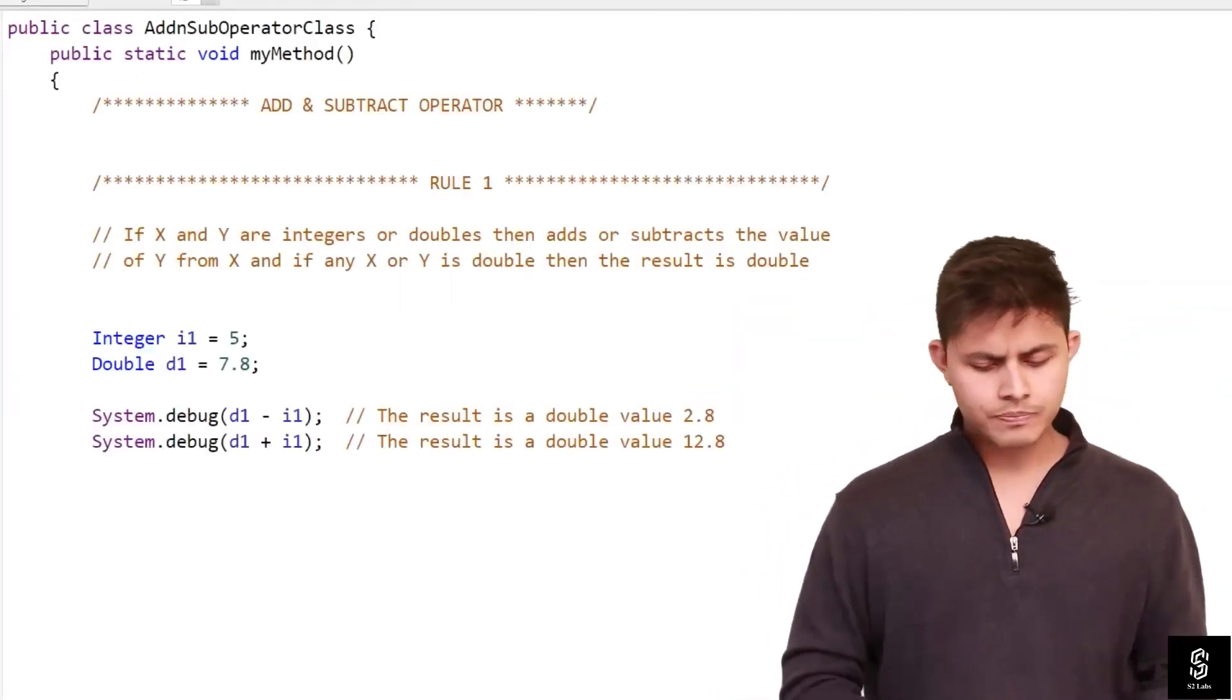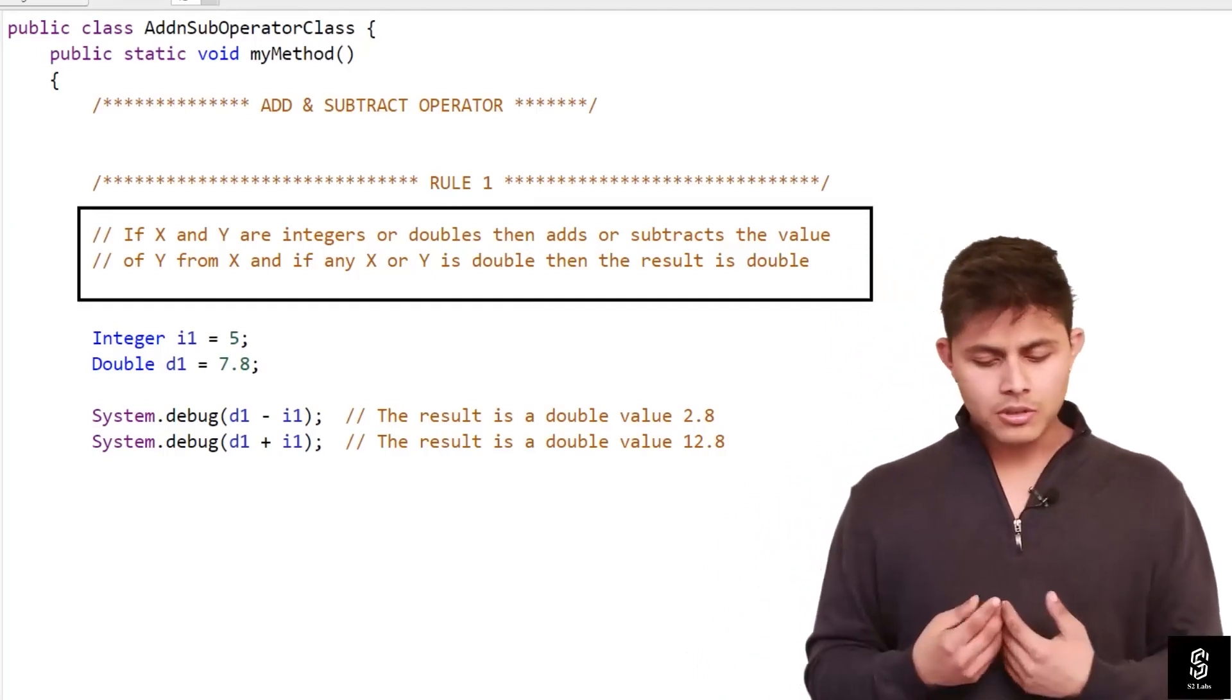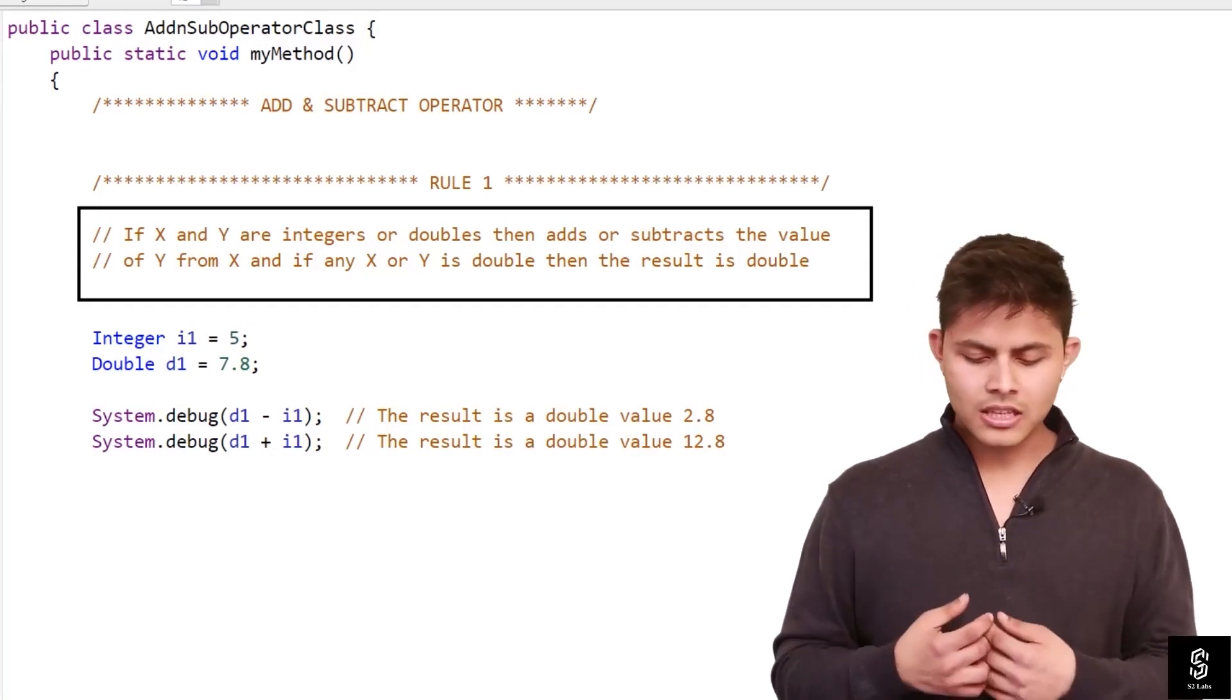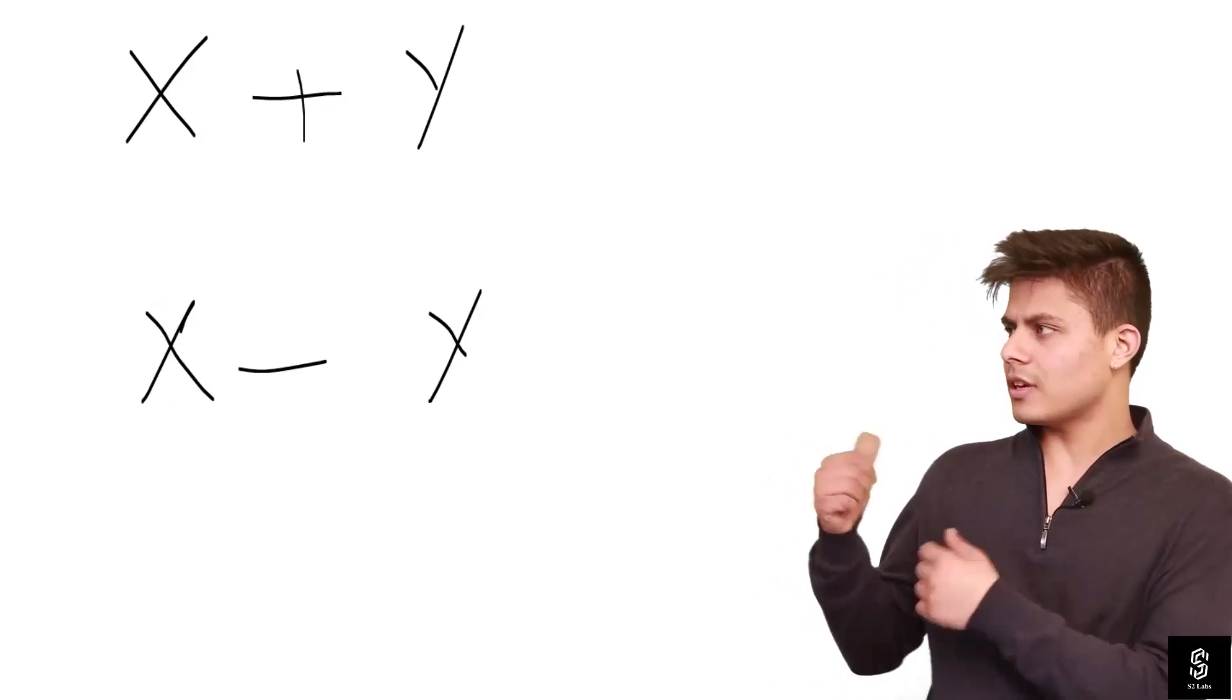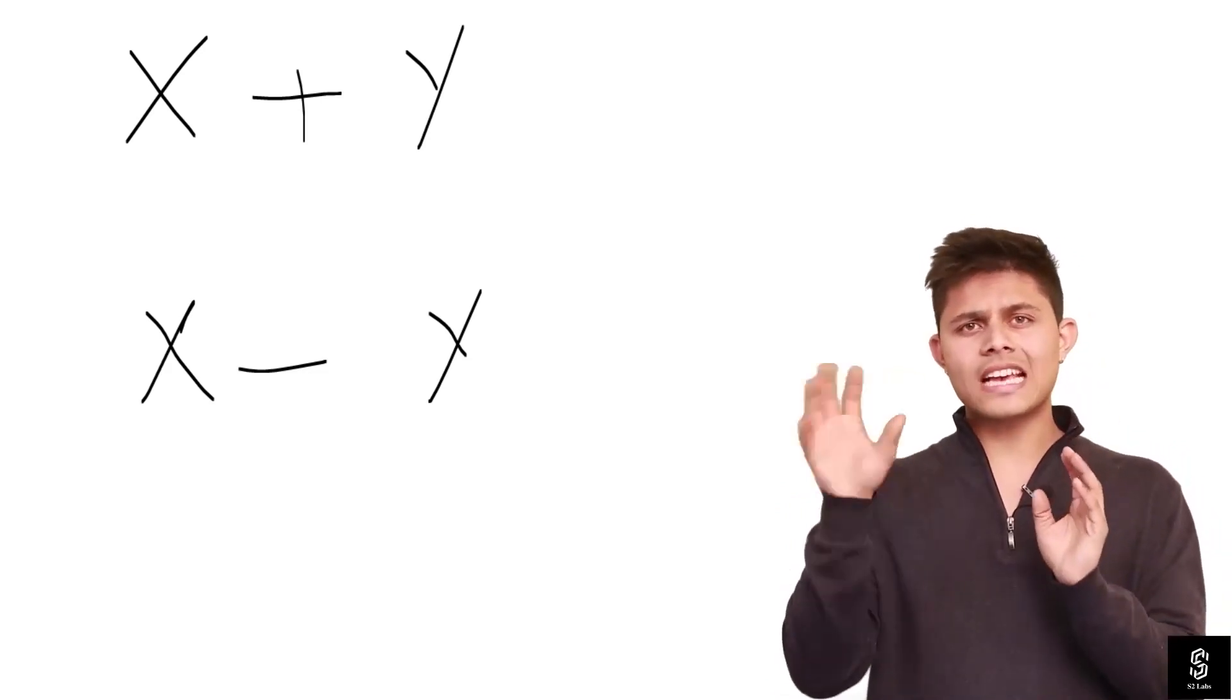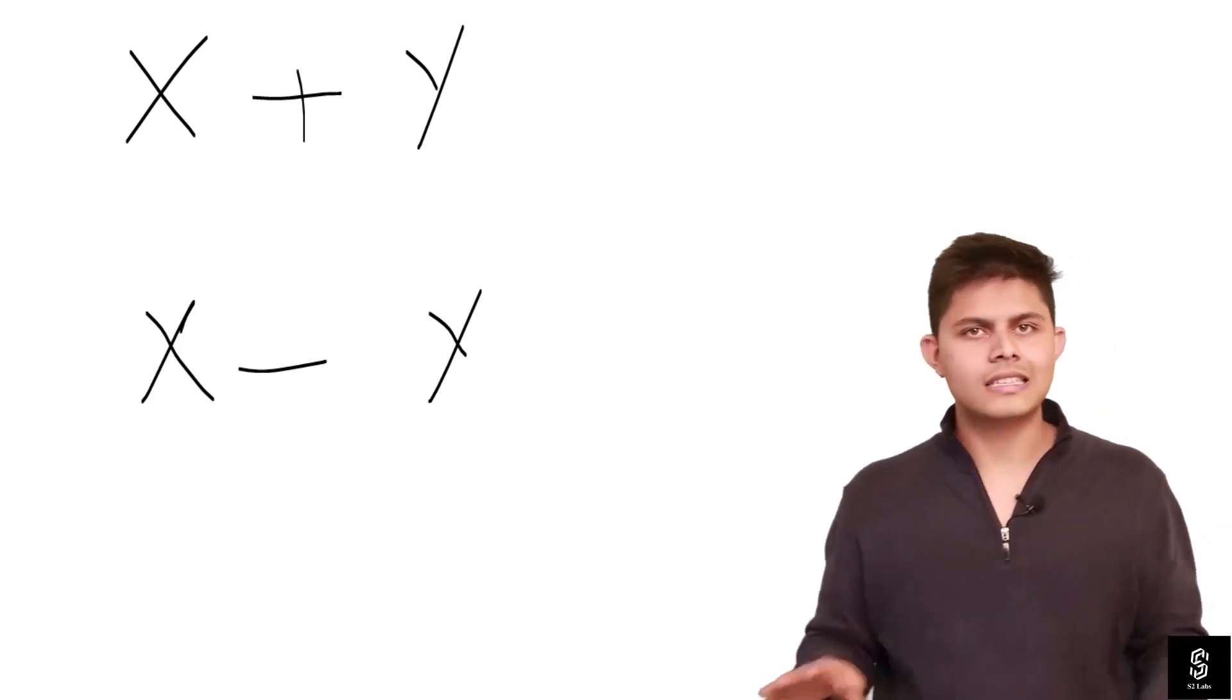The number one rule is if x and y are integers or doubles, then adds or subtracts the value of y from x. If any of x or y is double, then the result is double. What that means is if you're using x plus y or x minus y, if anyone amongst x and y is double, then the final output will be double.